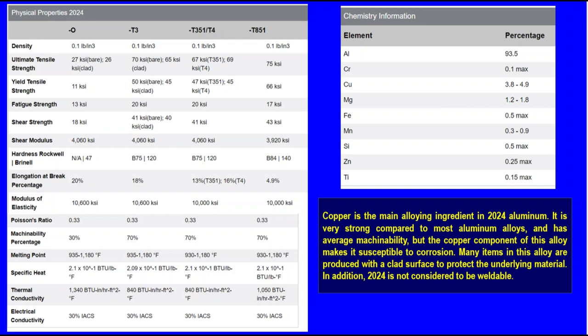In contrast, copper is the main alloying ingredient in 2024 aluminum alloy. It is very strong compared to most aluminum alloys but the copper content makes it susceptible to corrosion. Many items made from this alloy are produced with a clad surface to protect the underlying material. The alloy is not considered weldable. Its composition includes chromium at 0.1% maximum, copper at 3.8–4.9%, magnesium at 1.2–1.8%, iron at 0.5% maximum, manganese at 0.3–0.9%, silicon at 0.5% maximum, zinc at 0.25% maximum, and titanium at 0.15% maximum.